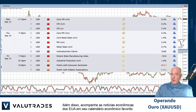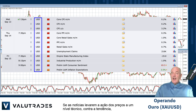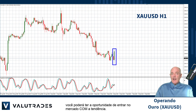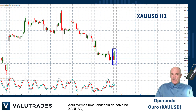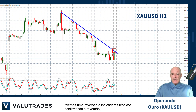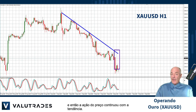Please follow US economic news on your favorite economic calendar. If the news drives price action into a technical level against the trend, you may have an opportunity to get into the market with the trend. Here we have a downtrend on XAU/USD. The economic news drove the price of gold up to this upper trend line, and we had a reversal with technical indicators confirming it. Then price action carried on with the trend.